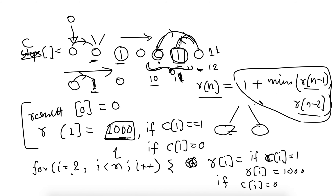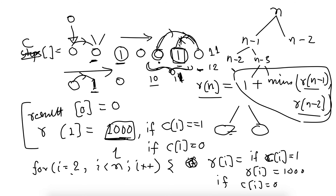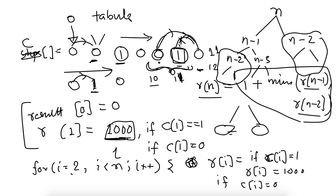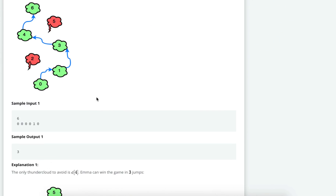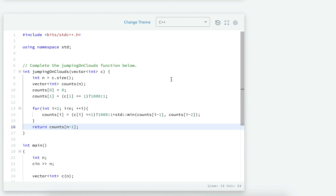This problem may seem lengthy but if you understand it well and simplify it, it's manageable. You could solve it with pure recursion, but if n grows beyond 40 or 50 it will explode, because finding r(n) requires r(n-1) and r(n-2), which in turn require further recomputation. We used the tabulation method of dynamic programming, solving bottom-up and saving results in the counts array to avoid recomputation. That's all for this video — see you in the next one.